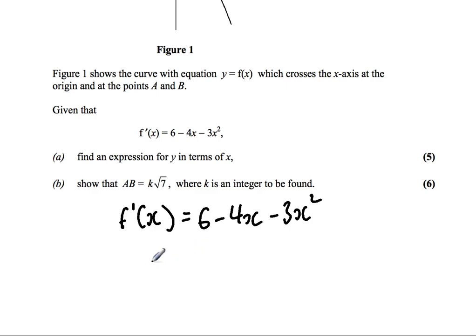Which will give us y. We should have 6x here. Raise the power by 1 and then divide. So it should be 2x squared, and on this side we should have x cubed. So our answer is y equals 3x minus 2x squared minus x cubed.